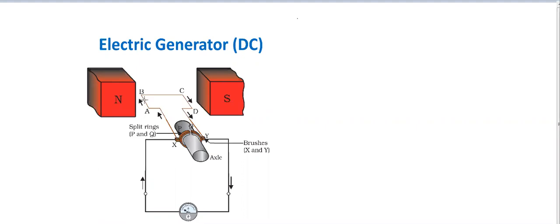Here, the coil ABCD is placed in a magnetic field and two ends of the coil are connected with two split rings. These split rings are connected with the axle so that the coil can be rotated in the magnetic field. These split rings are connected with two fixed brushes B1 and B2. Here, X and Y are connected with the galvanometer to detect the current produced.